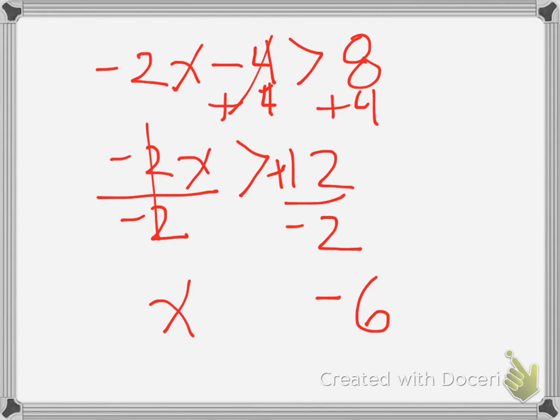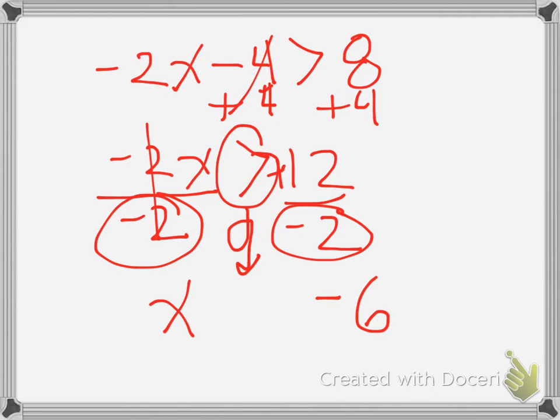And when that happens I divided by a negative 2. This is critical. I divided by a negative 2 on each side. What happens to this sign here is it turns around. It flips the other direction. So now x is less than negative 6.